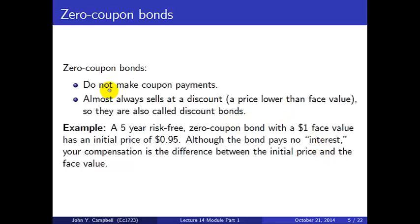Zero coupon bonds don't make coupon payments. Almost always they will sell at a discount — a price lower than face value — because a dollar in the present is worth more than a dollar in the future. So to get a dollar in the future, you spend less than a dollar today. This fact that they sell at a discount explains why they're also called discount bonds. As an example, a five-year risk-free zero coupon bond with a $1 face value might have an initial price of $0.95 — you're compensated by the difference between the $0.95 you pay and the $1 you'll get back in five years.